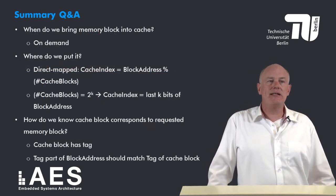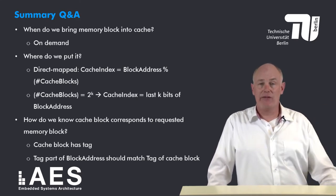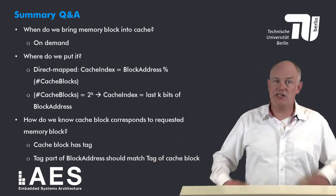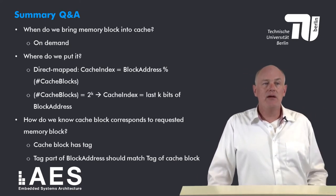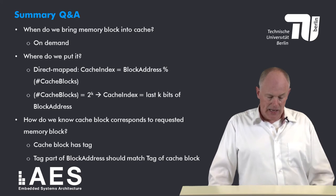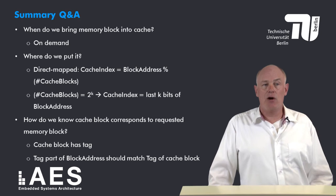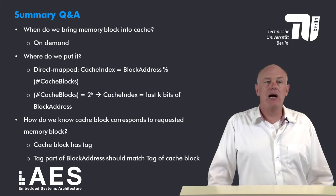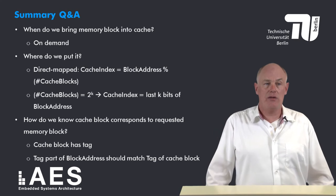To summarize: when do we bring a memory block into the cache? The simplest answer is on demand, and later we will talk about prefetching. Where do we put it? The simplest organization is a direct map cache, meaning the cache index is given by the block address modulo the number of cache blocks. If the number of cache blocks is a power of 2, the cache index is given by the last k bits of the block address, which allows us to compute the index very fast.